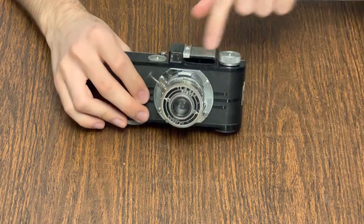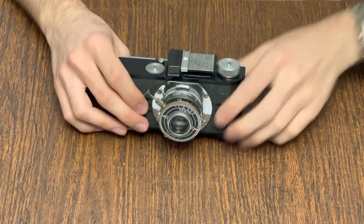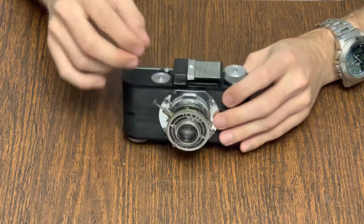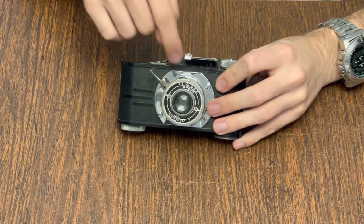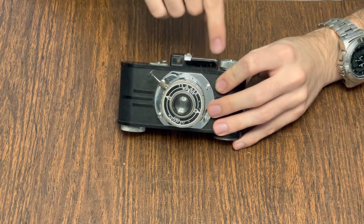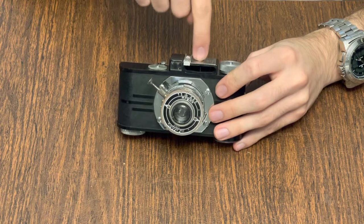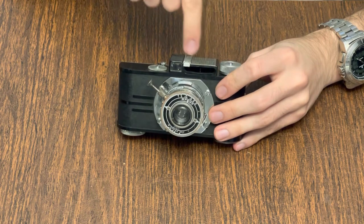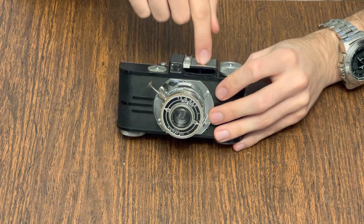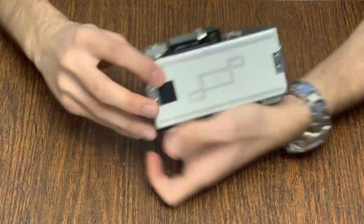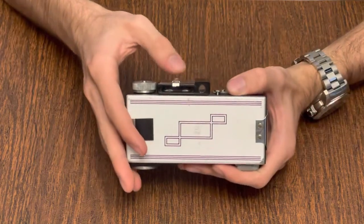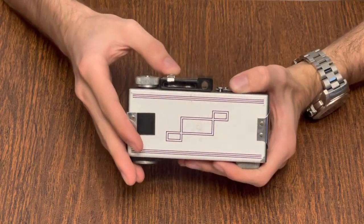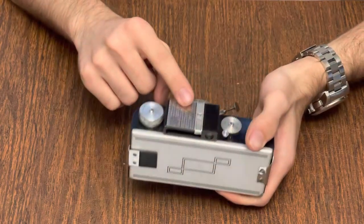On top of the camera between the film advance knob and the viewfinder is the extinction meter. Inside this cutout here is a number of filters that are neutral density filters that are calibrated to be one stop away from each other, and this cursor is pointed to the darkest illuminated one when the meter is pointed at the subject.